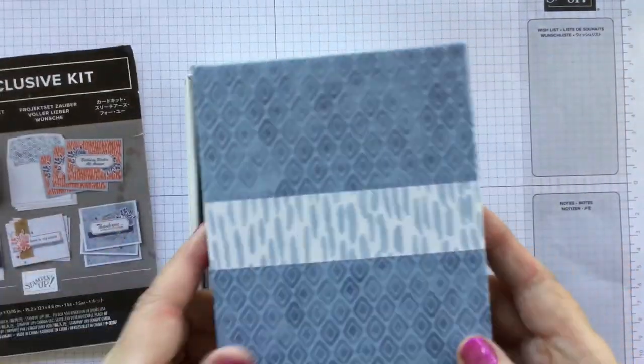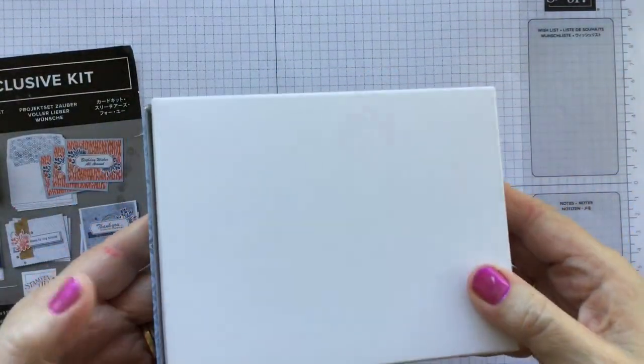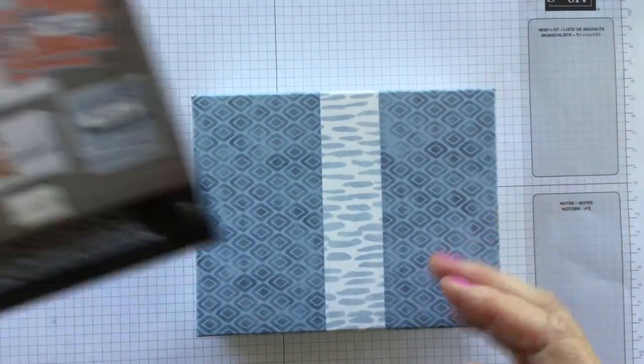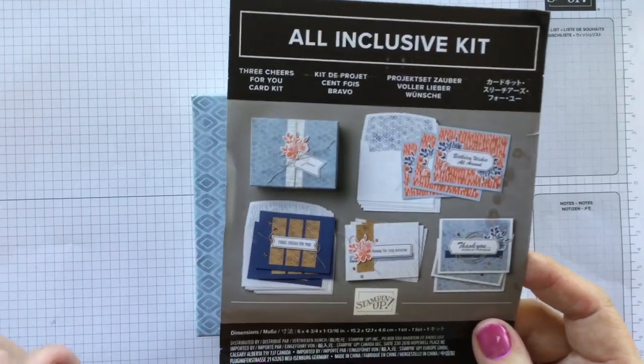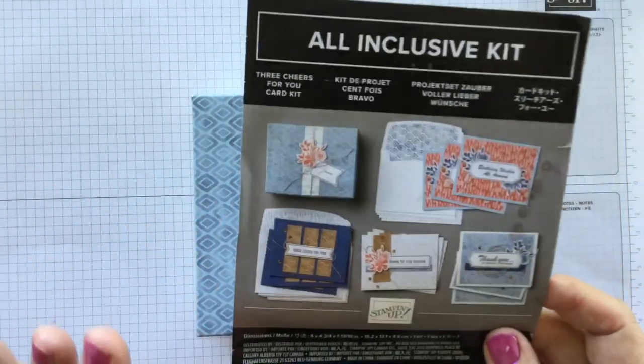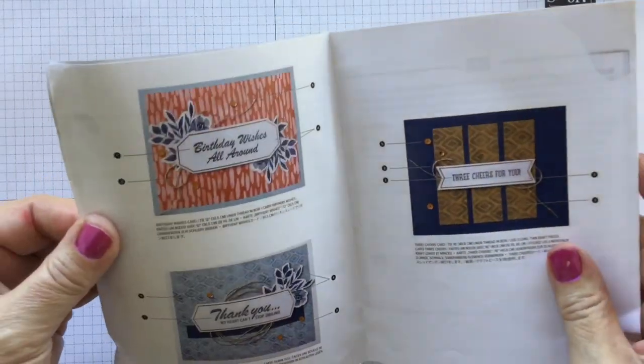Okay, so on to this beautiful kit box. It is called Three Cheers for You. It comes in a beautiful keepsake box that you can use for whatever you want. It comes with a little instruction booklet. It makes four different types of cards here and all of the instructions are here on this sheet. So very simple to make. All you need to do is to add adhesive.